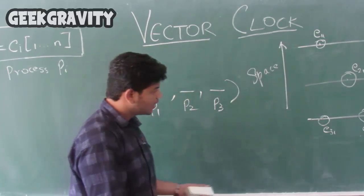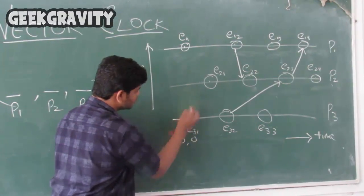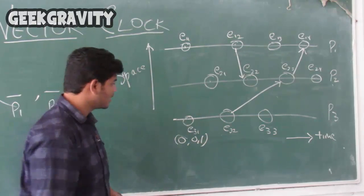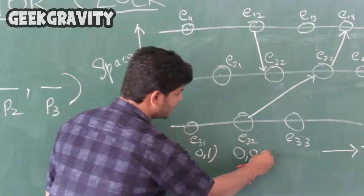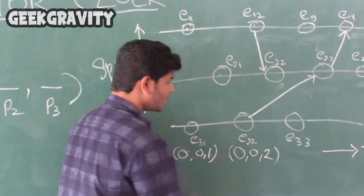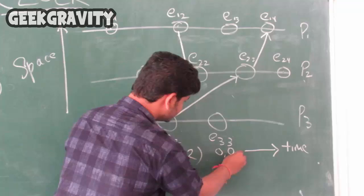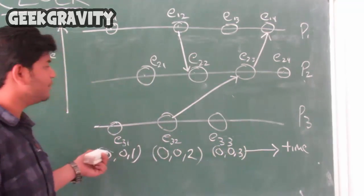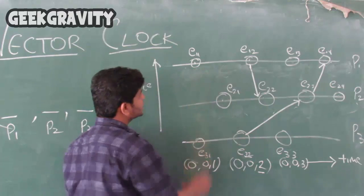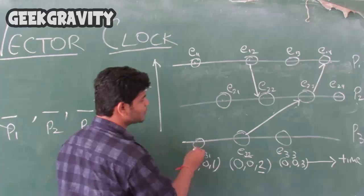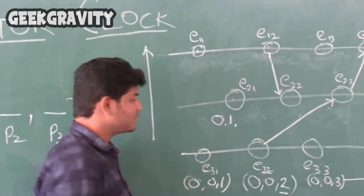Let us start from the bottom. The initial clock coordinates for P3's first event will be 0 for process 1, 0 for process 2, and 1 for process 3. This is a successive moment. For the next P3 event, it will be 0, 0, and incrementing by 1 gives 2. For another successive P3 event, it will be 0, 0, 3. Now for process P2: for E21, there is no message passing, so the timestamp will be 0 for process 1, 1 for process 2, and 0 for process 3.